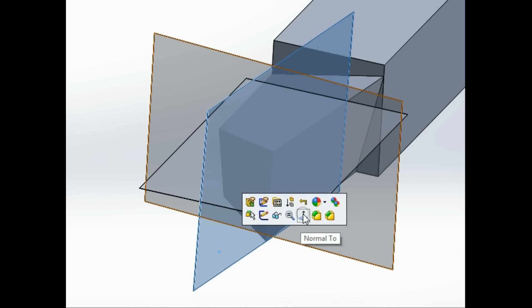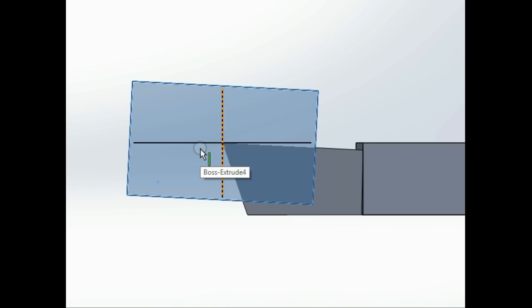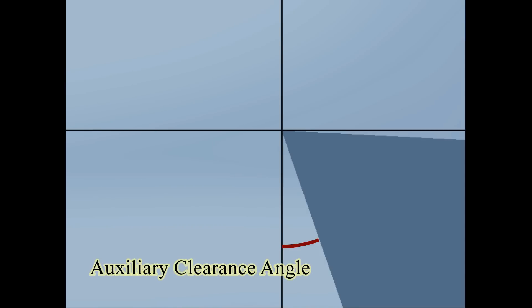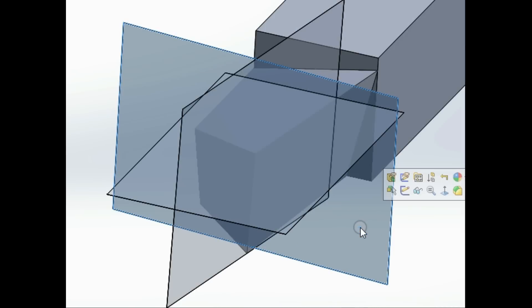Then the planes π_r and π_o form horizontal and vertical lines. This angle is called the inclination angle, while this one is called the auxiliary clearance angle. Similarly, if we look normal to the orthogonal plane...